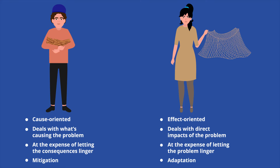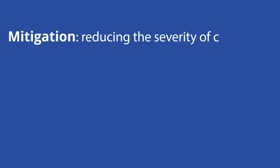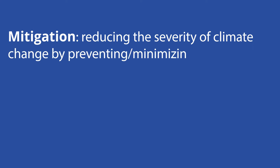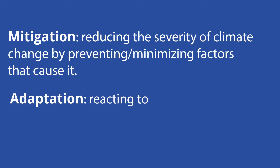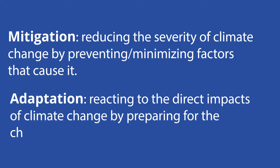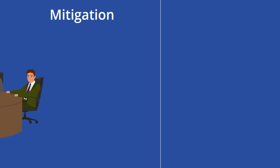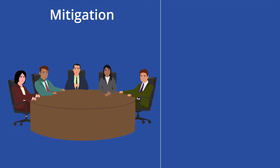The cause-oriented and effect-oriented plans highlight the difference between mitigation and adaptation — two approaches to climate change. Mitigation is reducing the severity of climate change by preventing or minimizing factors that cause it. Meanwhile, adaptation is reacting to the direct impacts of climate change by preparing for the change it will bring. In other words, mitigation is all about stopping harmful activities, and adaptation is dealing with the consequences of those activities.